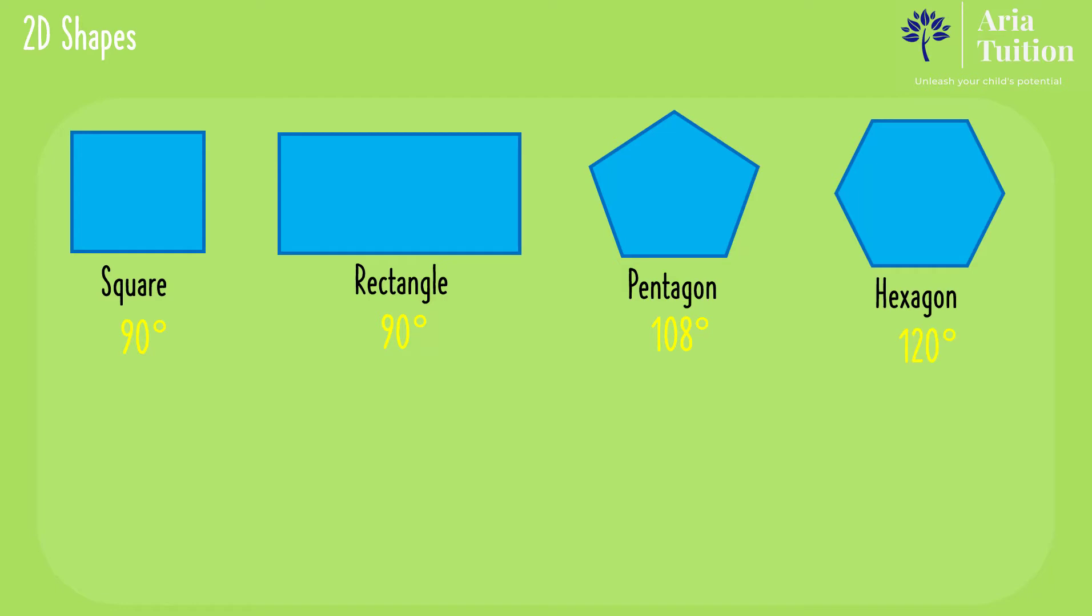Here's a hexagon where each angle is 120 degrees. This is an equilateral triangle where each angle is exactly 60 degrees.